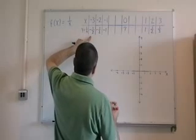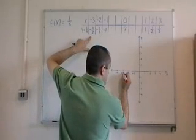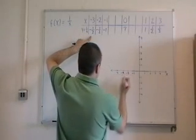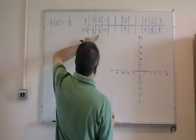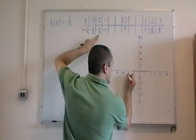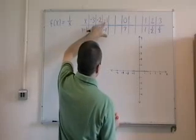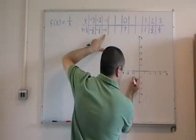So when x is minus 3, I get a y value of minus 1 third. That's around there. When x equals minus 2, I get minus 1 half. When x equals minus 1, I have minus 1.